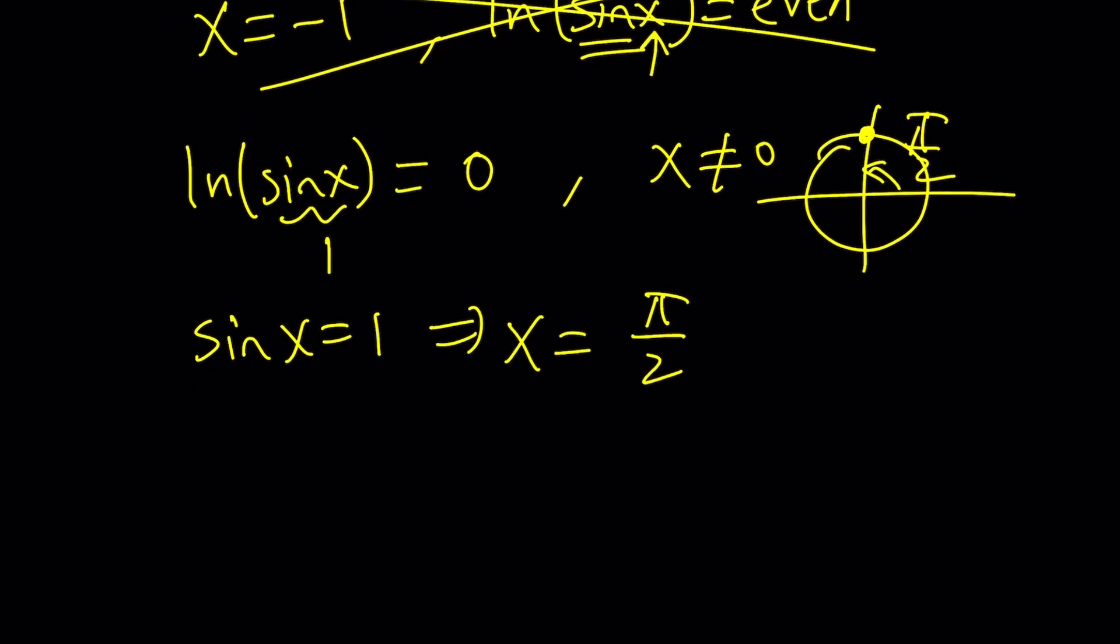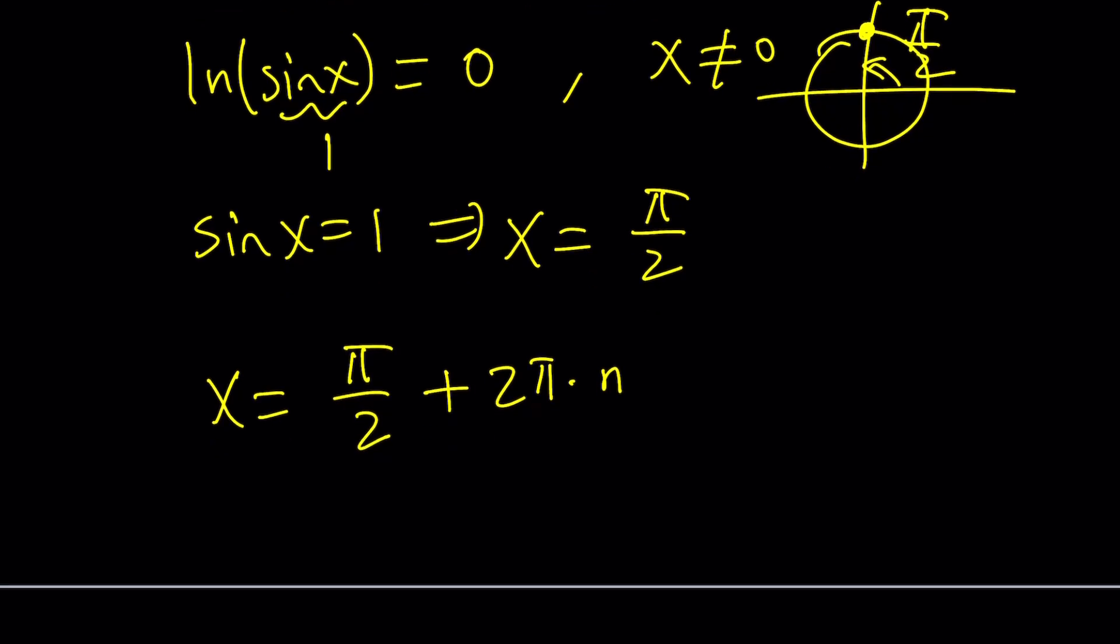And how do you find that? You just add multiples of 2 pi. So the general solution to this equation is that x equals pi over 2 plus 2 pi multiplied by n, where n is an integer. So if n is 0, you get pi over 2. If n is equal to 1, then you get x equals 5 pi over 2.